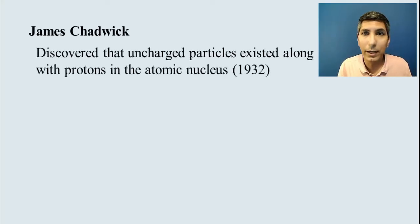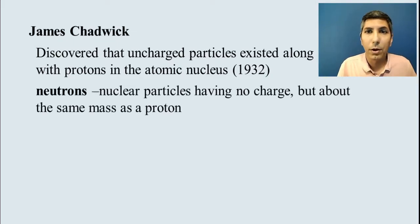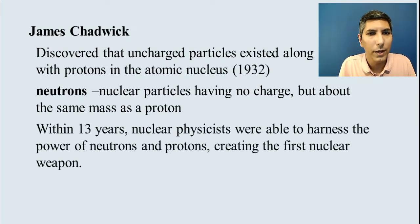James Chadwick was yet another scientist who discovered that there were uncharged particles along with protons in the nucleus. And that was in the early 1930s. These were called neutrons. We know that they have no charge. About the same mass as a proton. If you want to get technical, they weigh a little bit more than a proton. But not much. And this was essentially the basis for nuclear science, nuclear physics. They were able to take this complete story of the atom, the protons and the neutrons, and to a lesser extent, the electrons. And within 13 years of James Chadwick's discovery, they were able to create the first nuclear weapon. So we have those scientists that helped us understand the story of the atom.